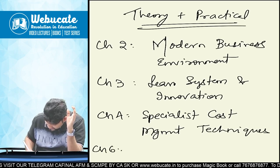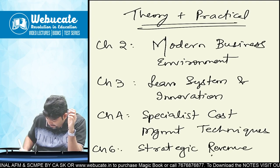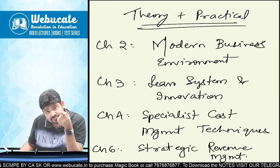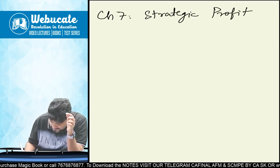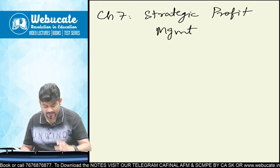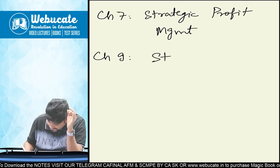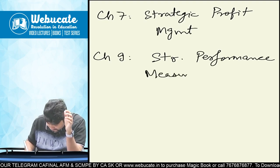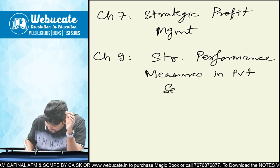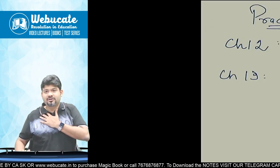The remaining chapters fall under theory plus practical: Chapter 2 — Modern Business Environment; Chapter 3 — Lean System and Innovation; Chapter 4 — Specialist Cost Management Techniques; Chapter 6 — Strategic Revenue Management; Chapter 7 — Strategic Profit Management; and Chapter 9 — Strategic Performance Measures in Private Sector. Chapter 9 is a superb combination of theory plus practical and one of the most important chapters. We must give equal weightage to all chapters.